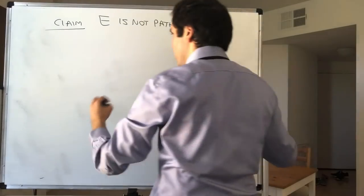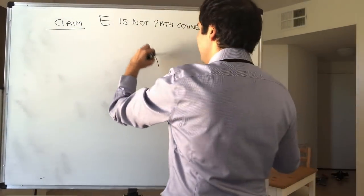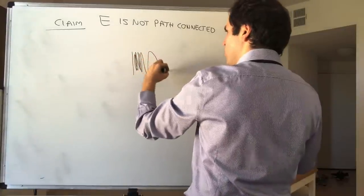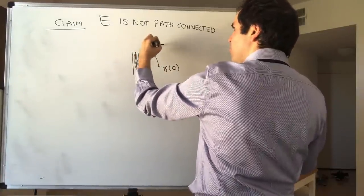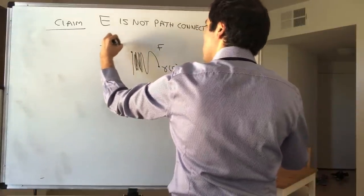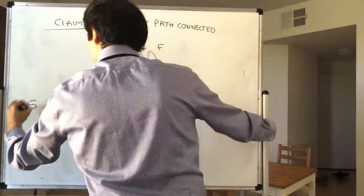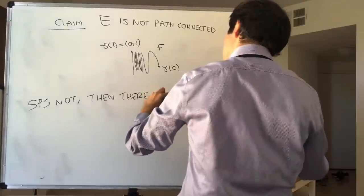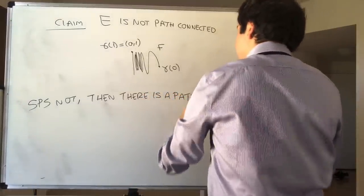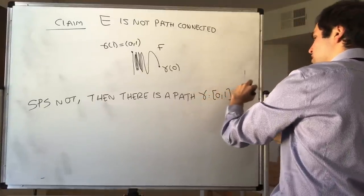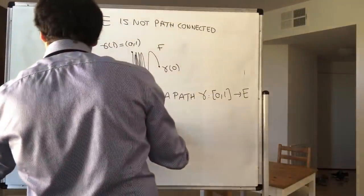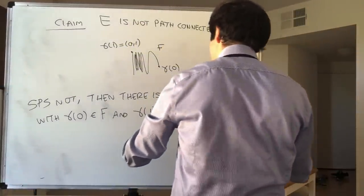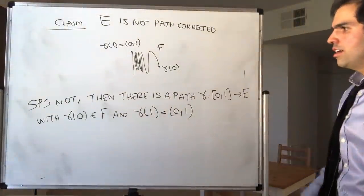Suppose not — meaning suppose E is path connected. Then in particular you can find some curve that starts in f and ends at the point (0, 1). So suppose not: then there is a path γ, a continuous function from [0, 1] to E, with γ(0) in f and γ(1) = (0, 1).